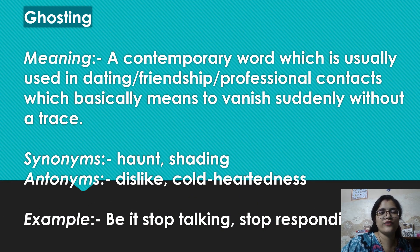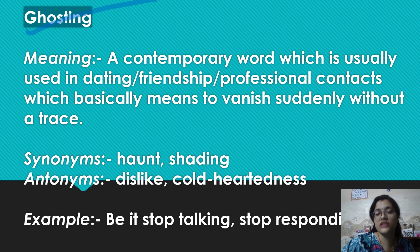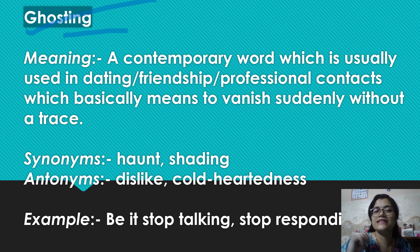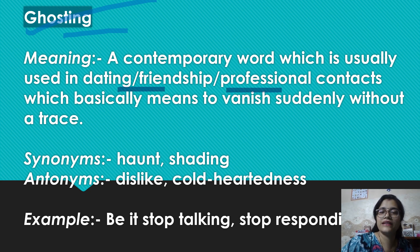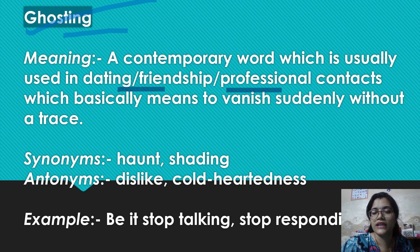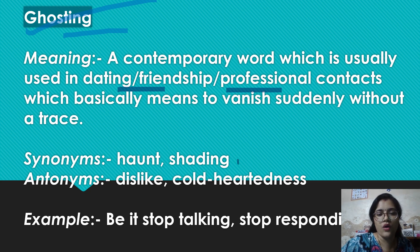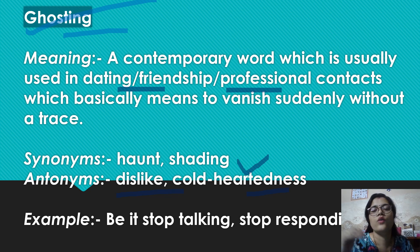Okay, next word guys jo hai woh aaj kal bohut popular hai — it is very much in trend. Aur kaafi isko relationship mein, friendship mein, ya phir professional context mein bhi use kara jaata hai. So the word is ghosting. Ghosting ka matlab kya hota hai — it's a contemporary word which is usually used in dating, friendship and professional contacts. Iska matlab ye hota hai: to vanish suddenly without a trace. Matlab agar aap kisi ki life se ikdam se gaayab ho jaate ho — for example that person is texting you or calling you and if you are not answering, toh uska matlab hai you are ghosting that person. Synonyms: haunt, shading. Antonyms: dislike, cold-heartedness.